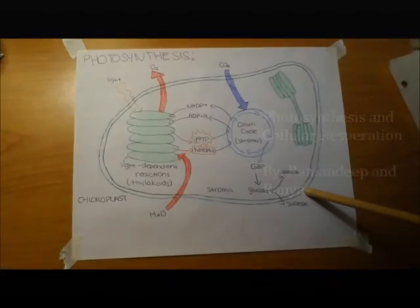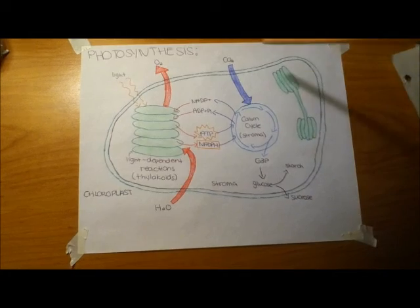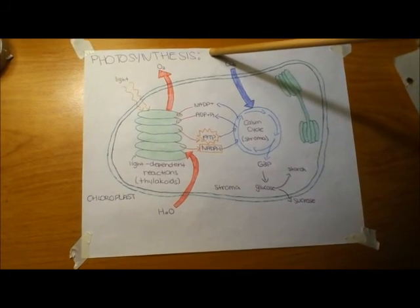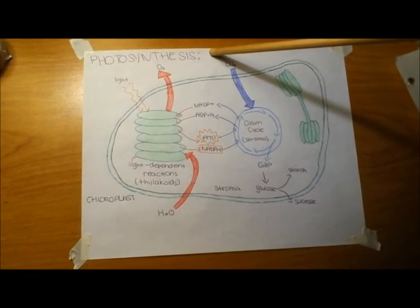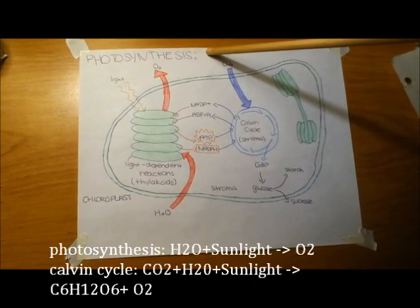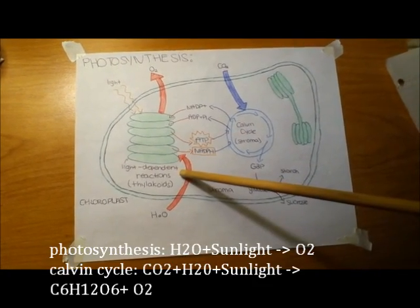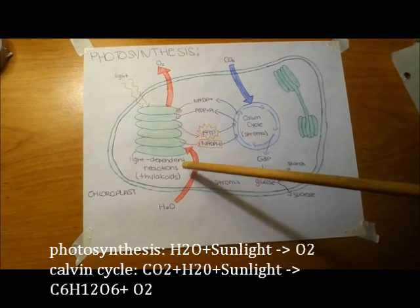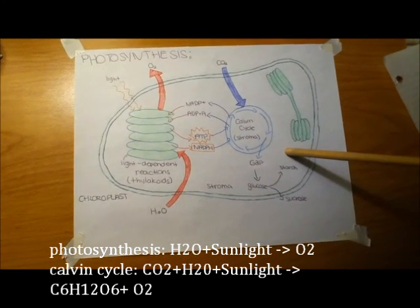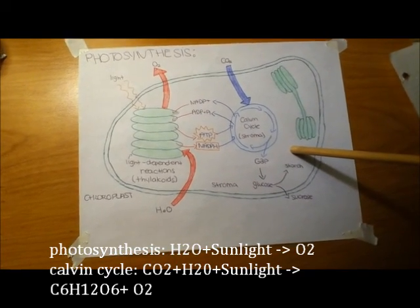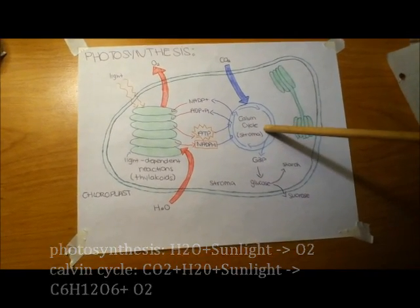This is a picture of the chloroplast in which photosynthesis occurs, and there are two different parts to it. We have the light-dependent reaction and we have the light-independent reaction, also known as the Calvin cycle.